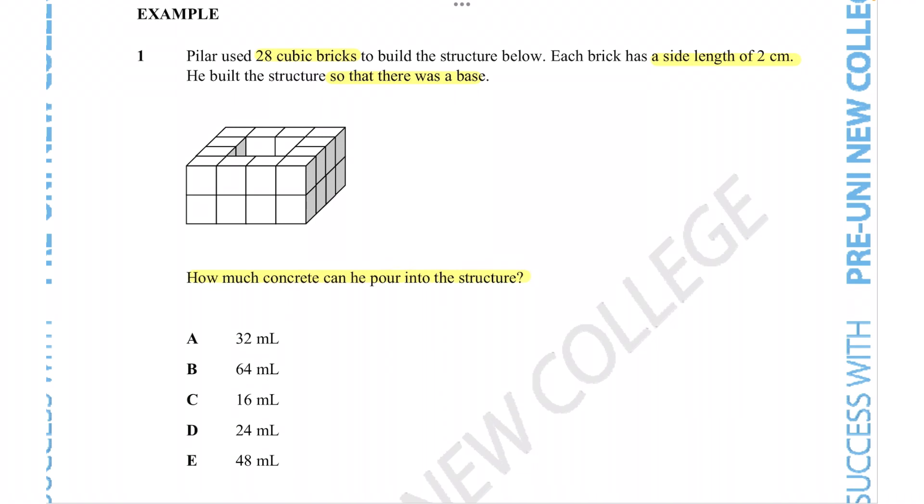Okay, so we need to figure out the volume of the hole that is found within the structure to find out how much concrete can fit into that hole. So the fact that this person has used 28 cubic bricks is going to be quite helpful in figuring that out. So let's count how many cubes that were used in this shape.